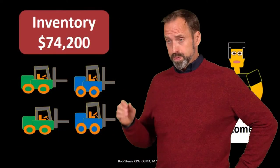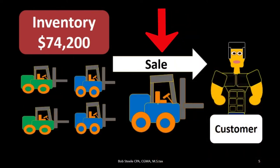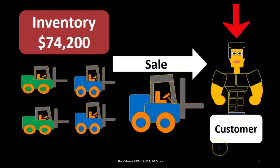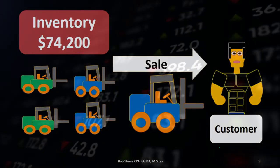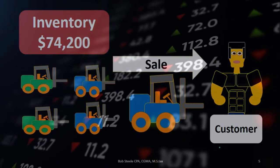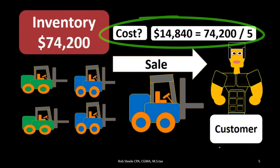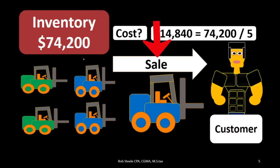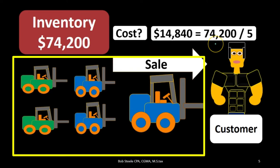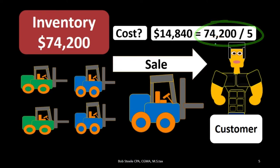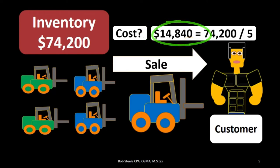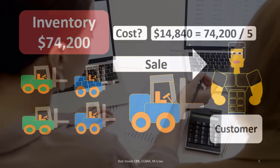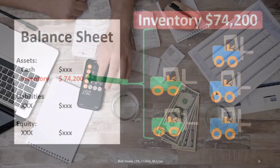The problem happens when we actually sell a forklift. We know what the sales price will be — that's not a problem. The real problem is the cost: how much of this $74,200 do we reduce it by when we sell one forklift? We might divide $74,200 by five and say one forklift is worth $14,840 — that's one form of averaging. But we might also do it a different way.